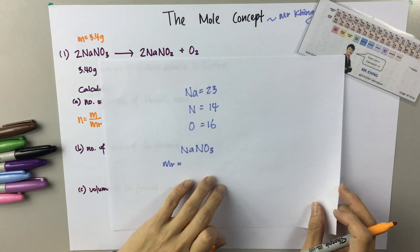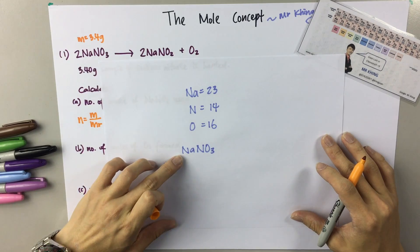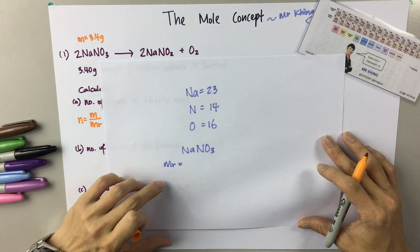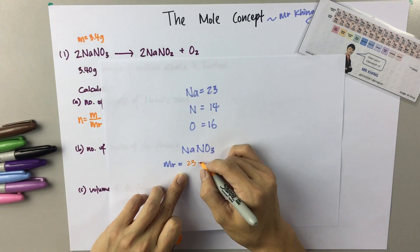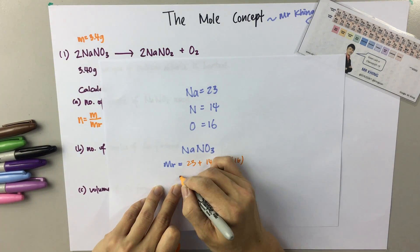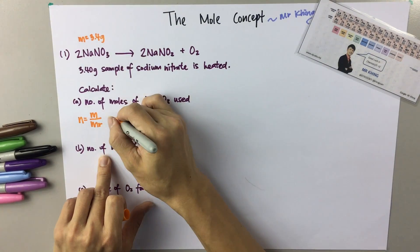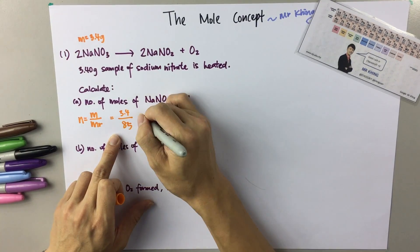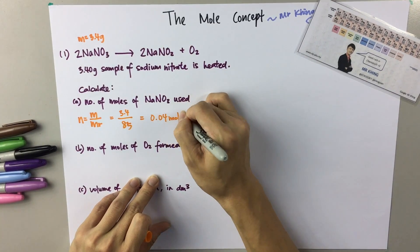So based on the periodic table, Na is 23, N is 14, O is 16. We want to look for the relative molecular mass for NaNO₃. So it will be Na = 23, N = 14, and there are 3 oxygens, so 3 × 16 = 48. Eventually you get 85. So the MR for NaNO₃ will be 85. So N equals to 3.4 divided by 85, giving the number of moles of 0.04 moles.